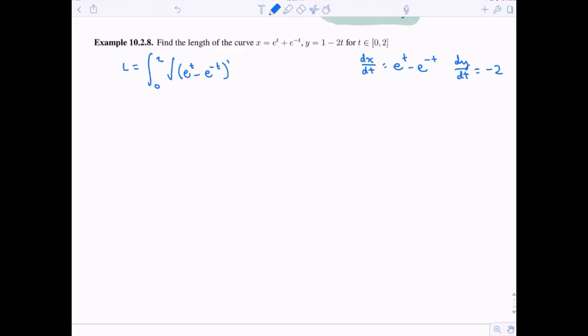Let's go ahead and plug these in. Remember, I need to square them. So I get e to the t minus e to the negative t quantity squared plus 4, because 4 is just negative 2 squared.